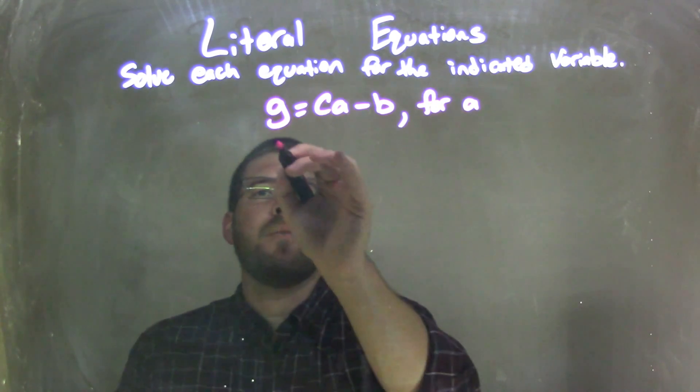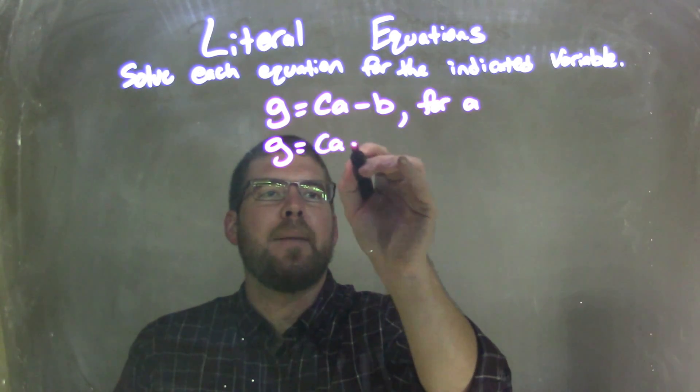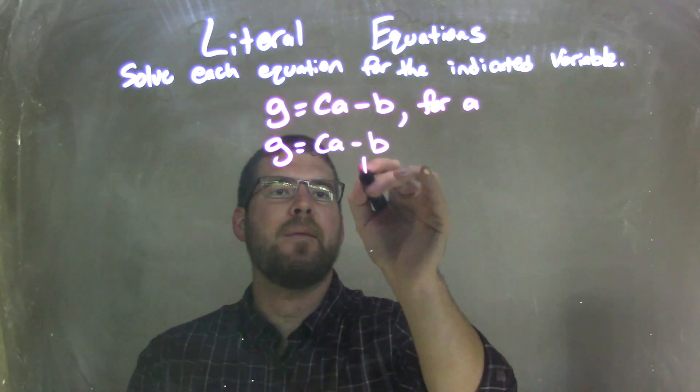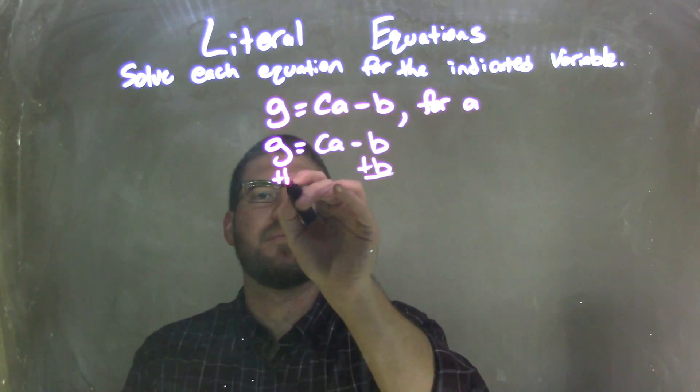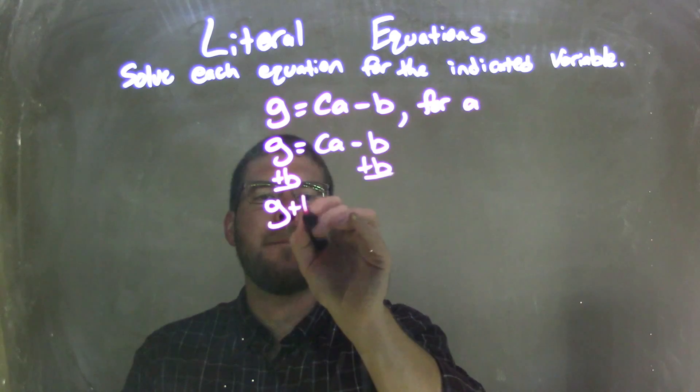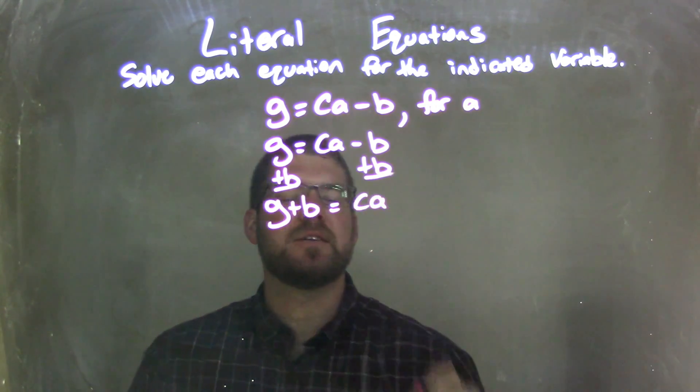Well, I'm going to rewrite my equation, G equals CA minus B. Now I need to solve for A, so I'm going to add B to both sides. That leaves me with G plus B on the left equals C times A on the right.